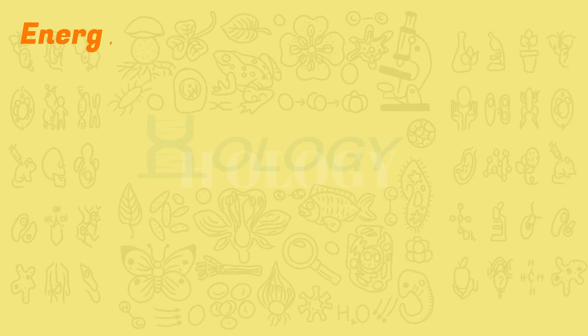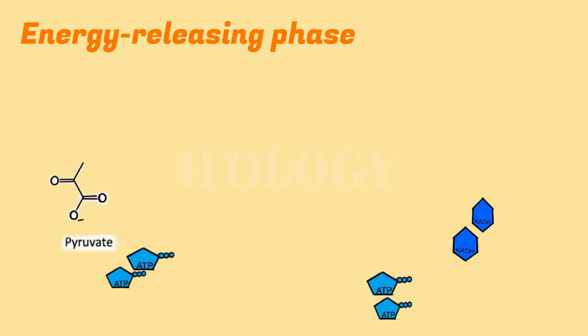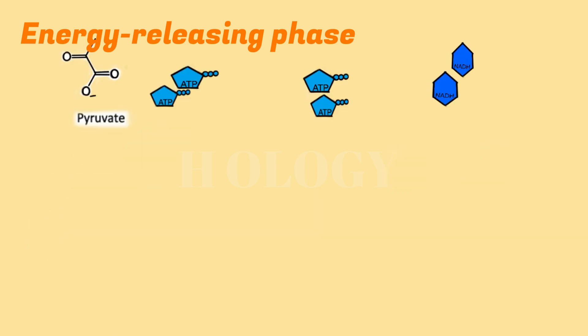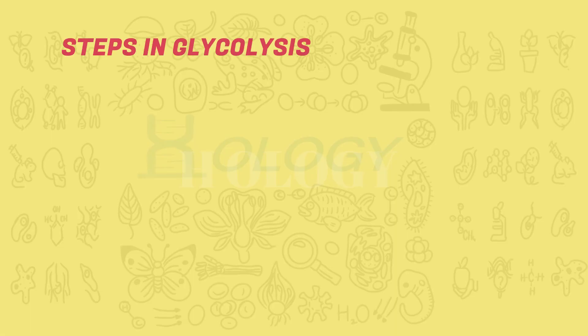Let's start with the energy-releasing phase. In this phase, each 3-carbon sugar is converted into another 3-carbon molecule, pyruvate, through a series of reactions. In these reactions, two ATP molecules and one NADH molecule are made. Because this phase takes place twice — once for each of the two 3-carbon sugars — it makes 4 ATP and 2 NADH overall.